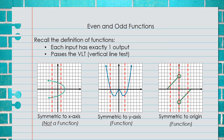Notice we have two open circles on this graph. Since they are both open, that is what is causing this to be a function. However, if both of those circles had been closed, then this would not have been a function.